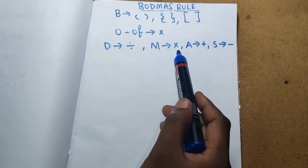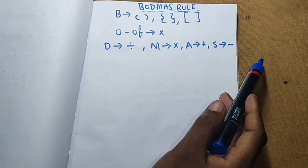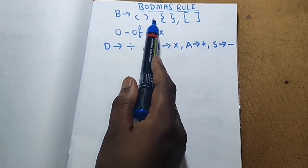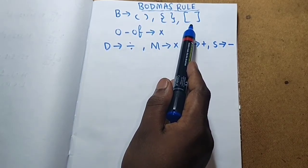D is division, M is multiplication, A is addition, S is subtraction. We have already discussed about this. Preference is open brackets. Next preference is flower brackets. Next preference is square brackets.